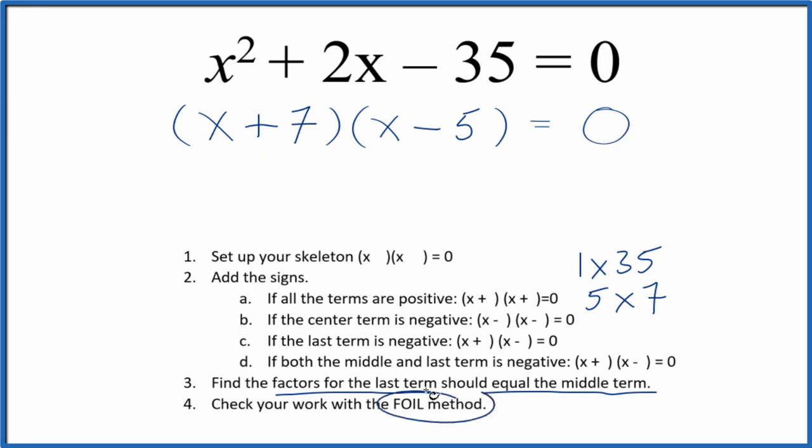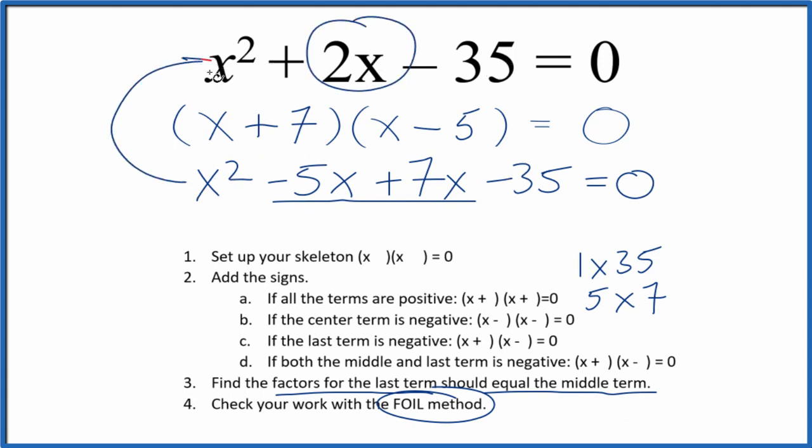But let's check with the FOIL method. Multiply the first, outside, inside, and last, and we end up with x squared minus 5x plus 7x minus 35. And you can see if we add negative 5x plus 7x, we'll get 2x. We have our negative 35 and x squared. So this is the same thing we started with. We've correctly factored the equation x squared plus 2x minus 35.